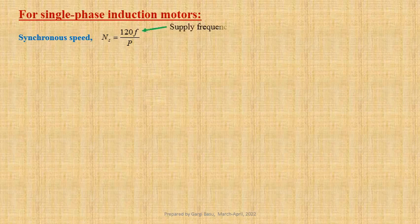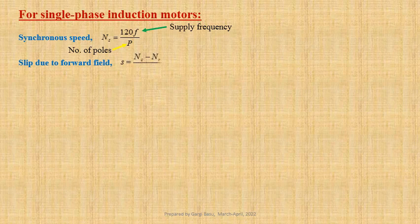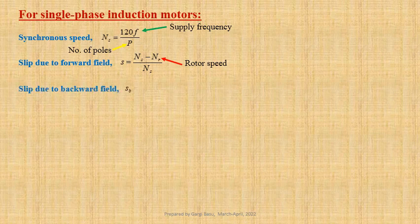Let us have a look at the equations we shall use today to solve the problems on single phase induction motors. Synchronous speed Ns equals to 120F by P, where F is the supply frequency and P is the number of poles of the machine. Slip due to forward field S equals to Ns minus Nr divided by Ns, where Nr is the rotor speed in revolutions per minute. Slip due to backward field Sb equals to Ns plus Nr divided by Ns, that is equal to 2 minus S.